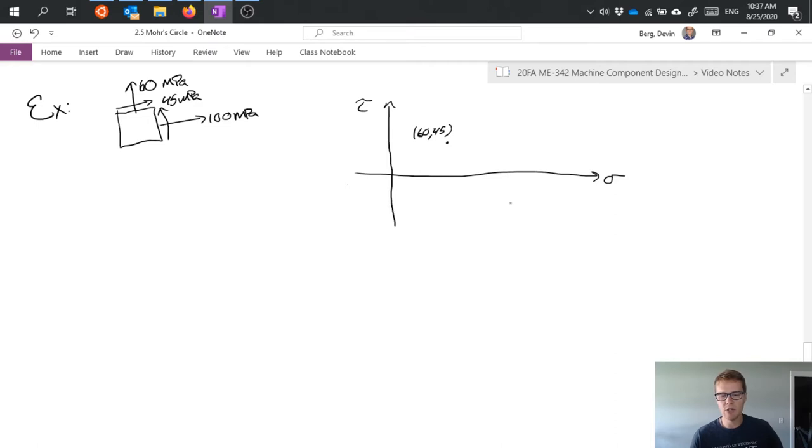But now my arrow is pointing up which would cause a counterclockwise rotation of my stress element. So I have a negative shear stress.